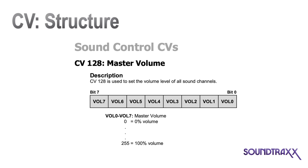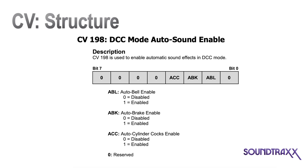Most CVs contain a single piece of data that can be represented in decimal or binary. For example, CV 128 is master volume. The value of this CV can be loaded with any value from 0 to 255, and it will only affect one thing: the overall volume of the decoder. Some CVs, on the other hand, will control more than one single effect. In these cases, you will use individual bits to control multiple features. A CV is comprised of eight bits, and this allows eight distinct features to be controlled by one CV.